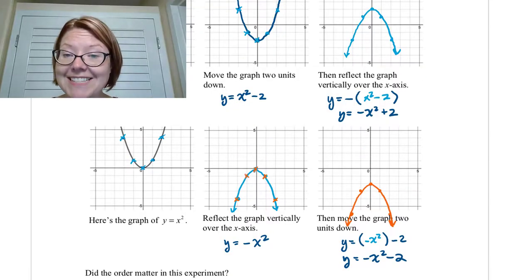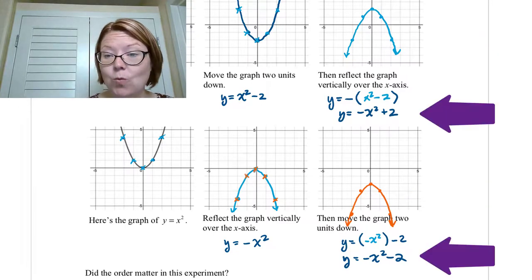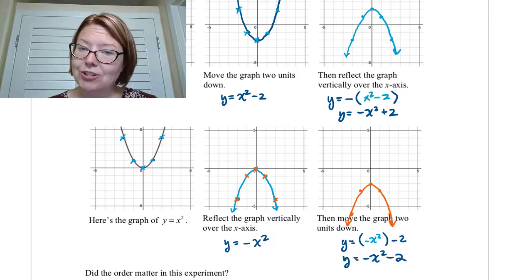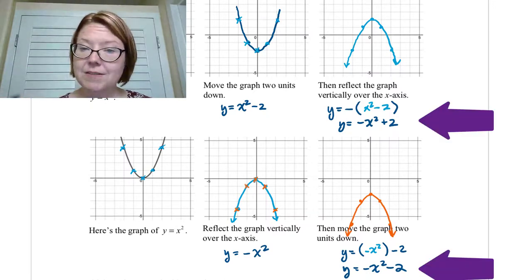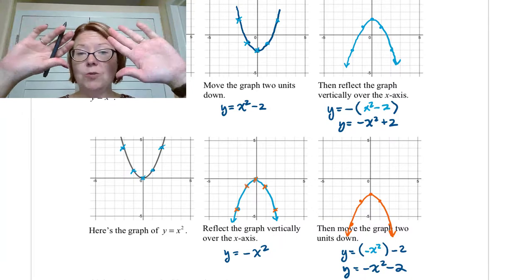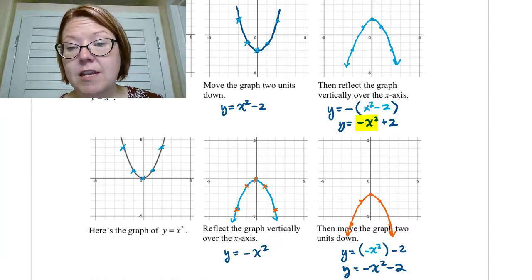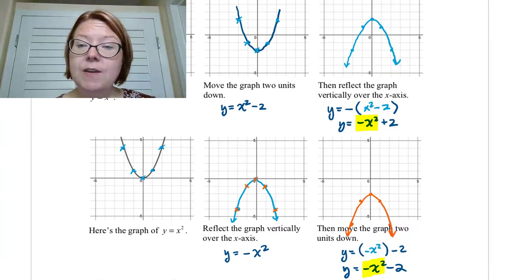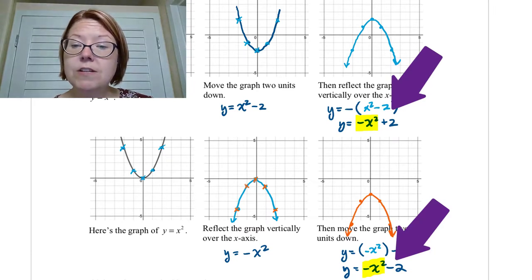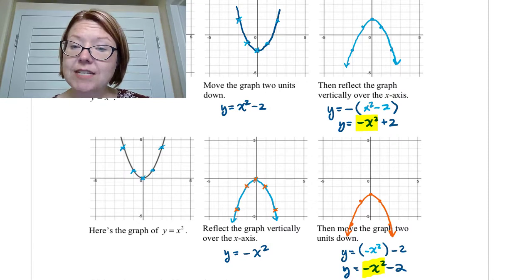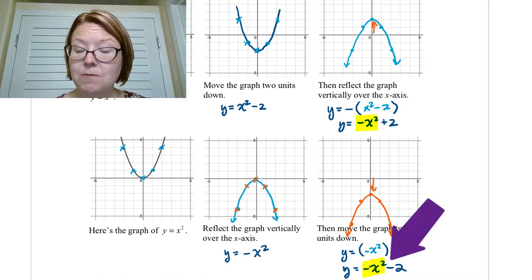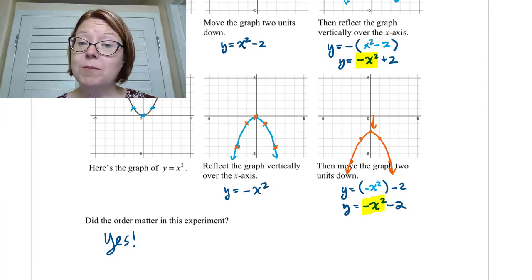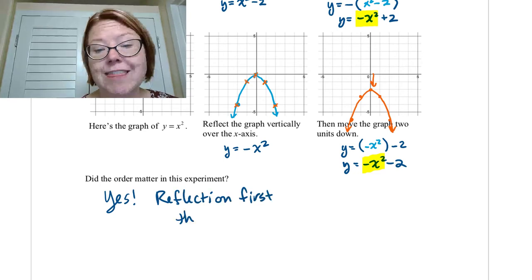Comparing the two results, we do not get the same graph and we do not have the same equation. So in this case, the order did matter. When we mix vertical translations with other types of transformations, we have to be careful about the order. Both equations have the parabola turning upside down via the negative x squared term, but one shifts up and one shifts down. Looking at the formulas, we should apply the reflection first and then the translation.